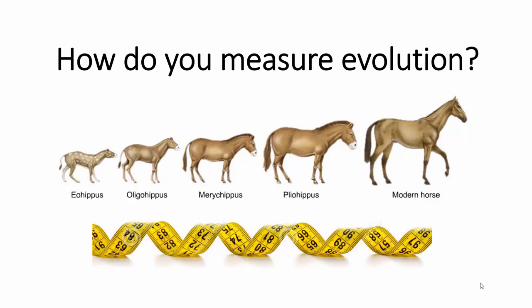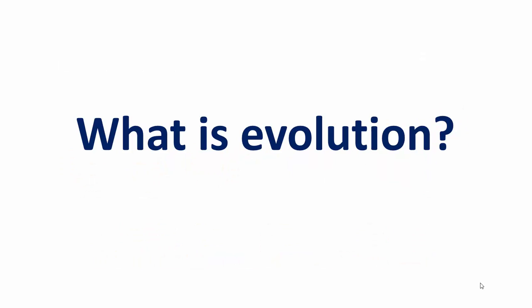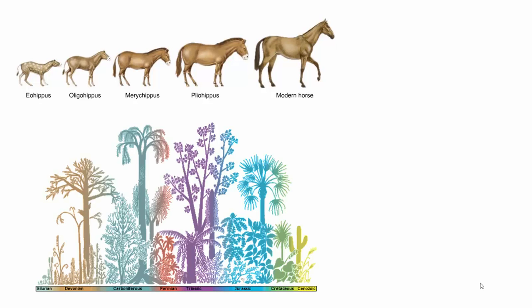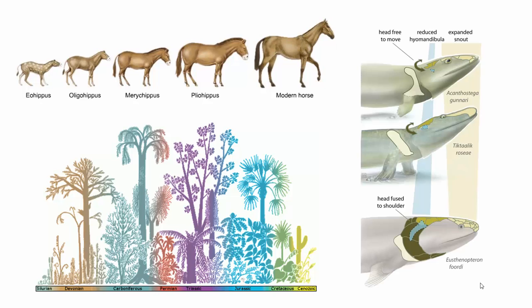Today we're going to tackle the question: how do biologists measure evolution? In order to do that, we're going to have to first answer a more fundamental question — what is evolution, anyway? We could look at how smaller horses became the large modern horse, or at various plant forms over the last few million years, or how fish evolved the ability to walk on land. But what we're going to do is take a look at what a biologist might do today to measure evolution in a natural population.